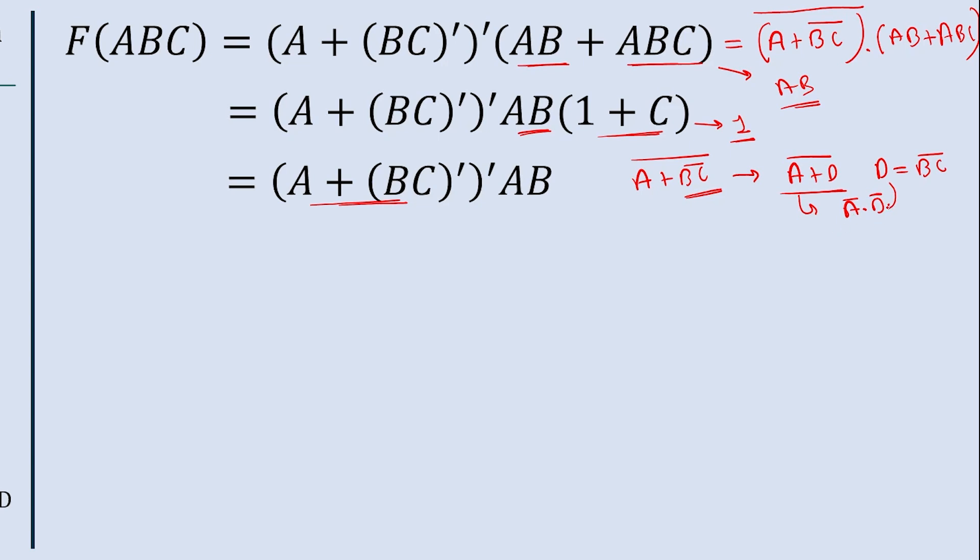Now we will replace the value of this D. So now when we solve this, we can write A bar into this bar as it is, but this D is equal to BC bar, so we will write BC bar. So the final equation is A bar into BC bar's bar.